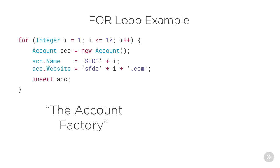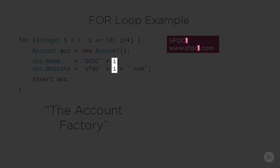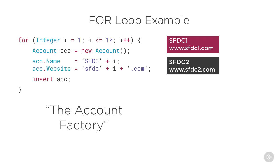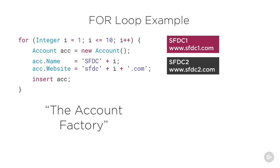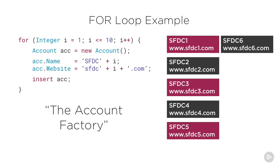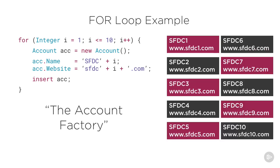As we run through this loop, here's what the output will be. The first time the loop iterates, it'll create a new account with name sfdc1 and website sfdc1.com. The 1 comes from the variable i. The second time it loops, it'll create another account with sfdc2 as the name and sfdc2.com as the website. Again, the number 2 comes from the variable i. This pattern continues until the loop creates its final account when i equals 10.